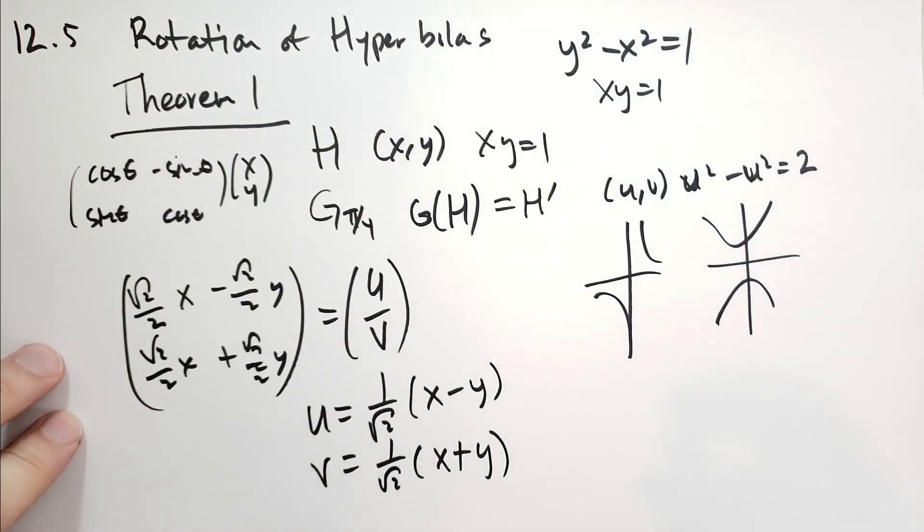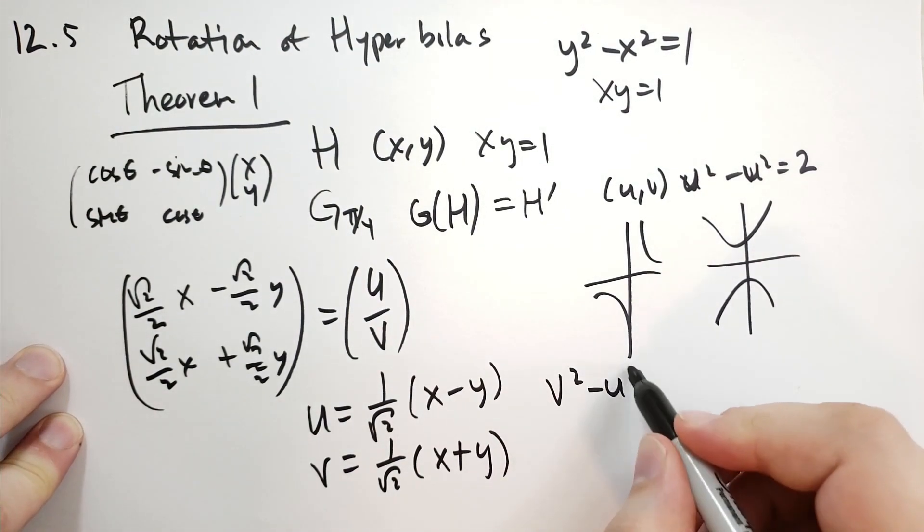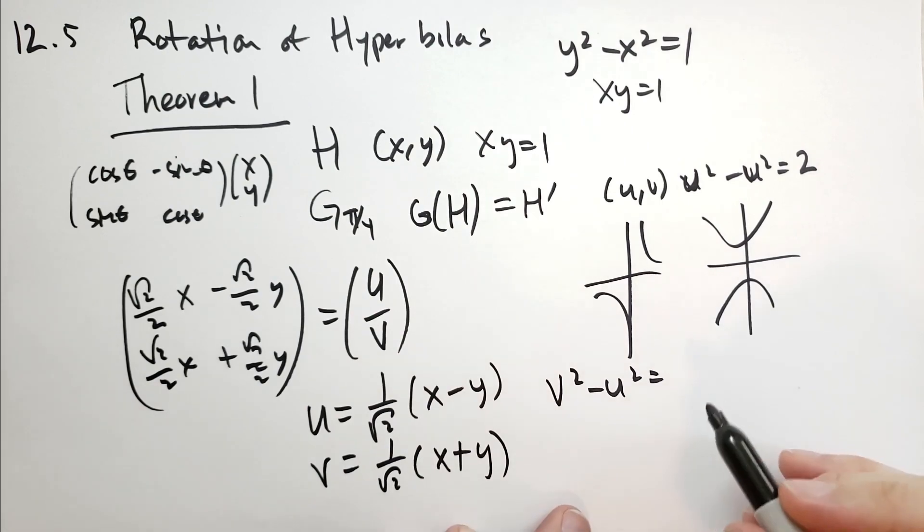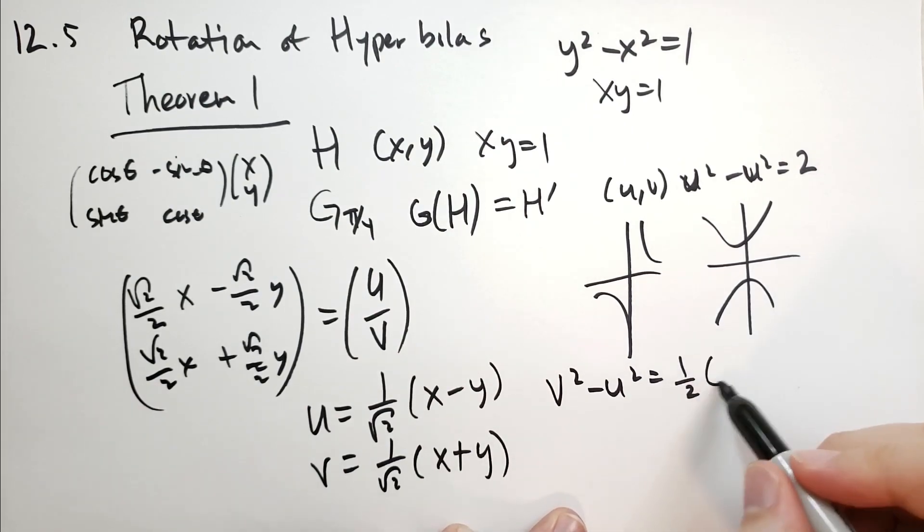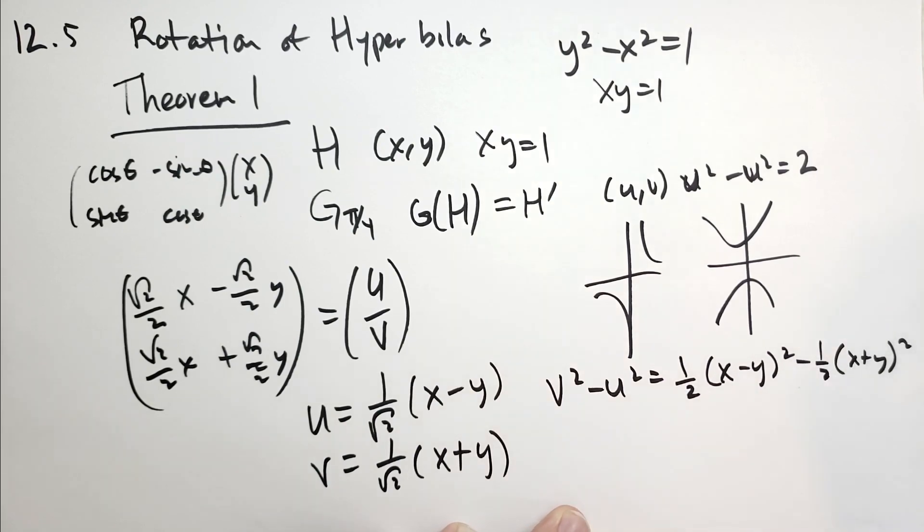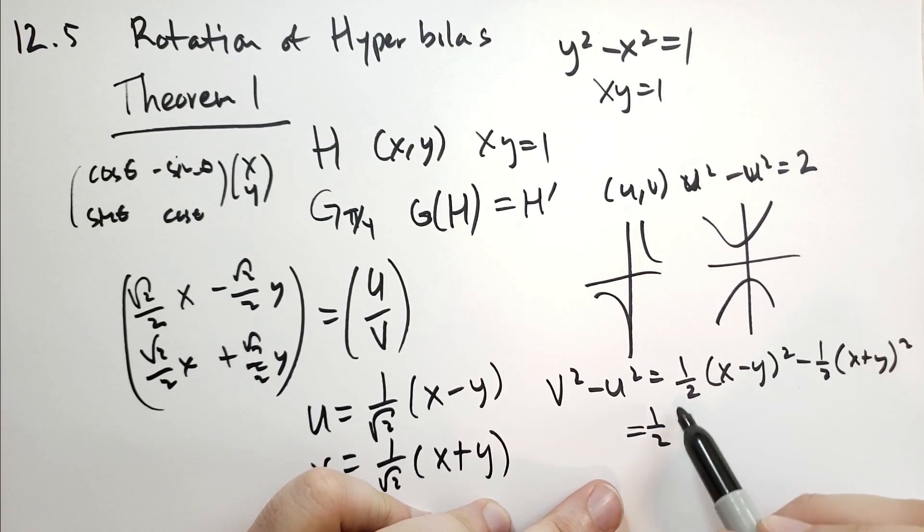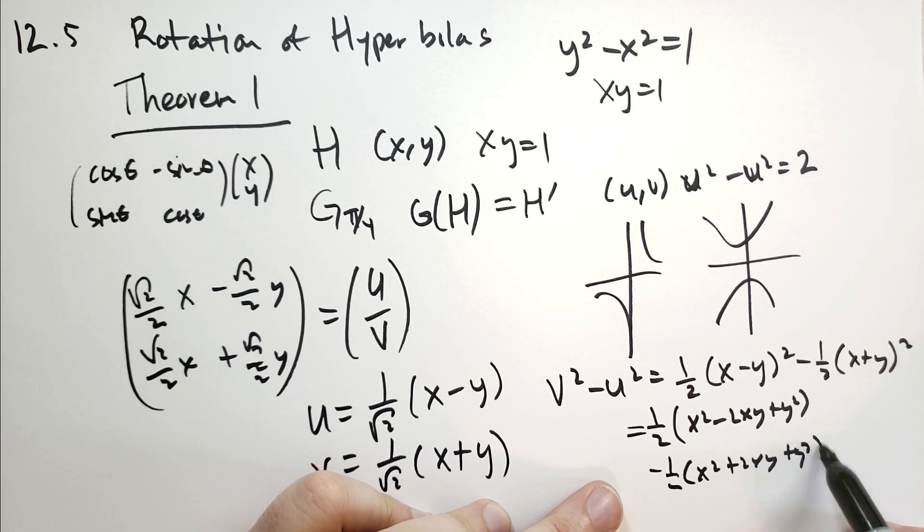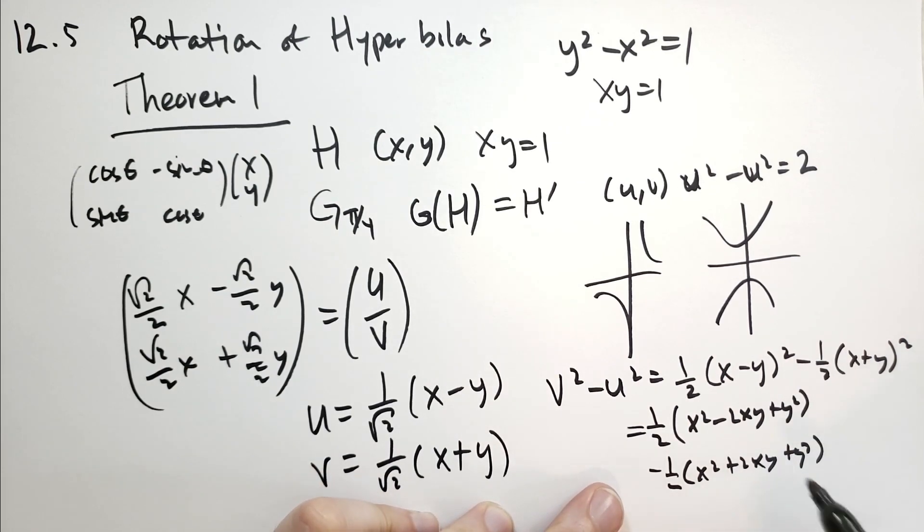If we were to take v squared minus u squared, what is that going to equal? Well, that's going to be 1 half times x minus y squared minus 1 half times x plus y squared. And doing a little bit of algebra.